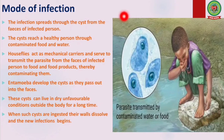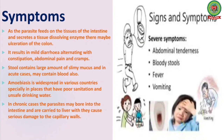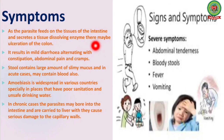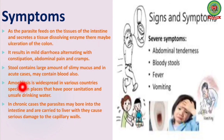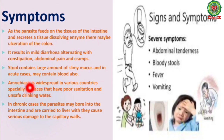The amoeba develops cysts as it passes out in the feces. These cysts can survive in dry and unfavorable conditions outside the body for a long time. When such cysts are ingested, their walls dissolve and new infection begins. As the parasite feeds on the tissues of the intestine and secretes a tissue-dissolving enzyme, there may be ulceration of the colon. This results in mild diarrhea alternating with constipation, abdominal pain and cramps, and stool containing large amounts of slimy mucus — and in acute cases, traces of blood.